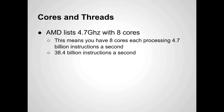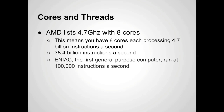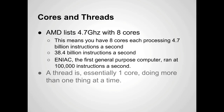That's 4.7 billion instructions a second — billions with a B. ENIAC, the first general purpose computer, ran at 100,000 instructions a second. Just to put that into a little bit of perspective.